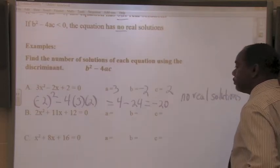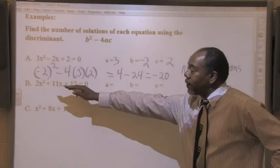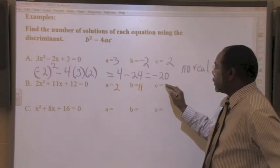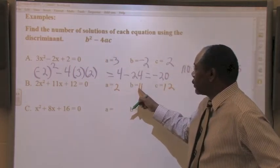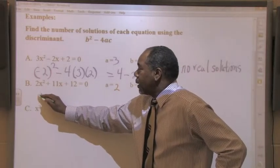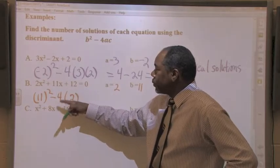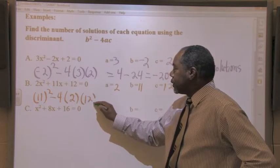Let's take a look at the other two. And again, evaluate your terms. A is 2, B is 11, C is 12. I'm going to take the B value, square it. 11, I'm going to square it. Minus 4 times the A value, which is 2. Minus 4 times the C value, which is 12.